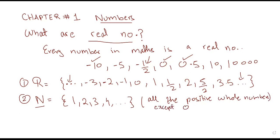In natural numbers we do not have zero. The set of natural numbers starts with one. We do not have any fractions or decimal numbers — only positive whole numbers: one, two, three, four, five, and so on till infinity. So every positive whole number is a natural number.